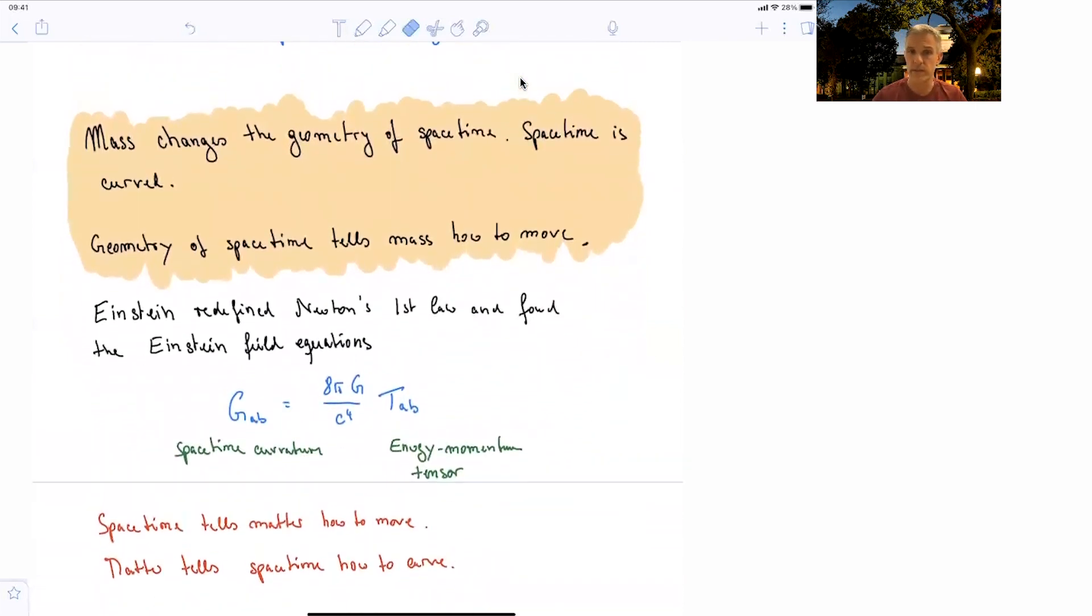So if you read this description, you can read it from one side to the next. Space time tells matter how to move. Or you read it from the other direction: matter tells space time how to curve. There is an equation, and you can read it from the left to the right or from the right to the left.